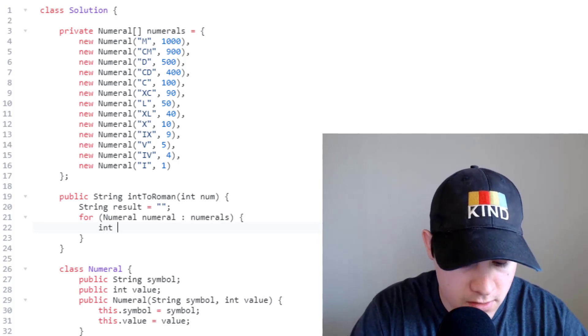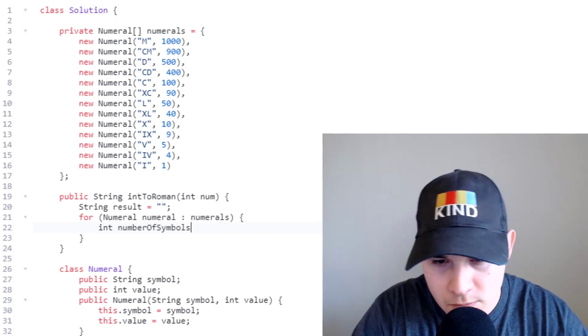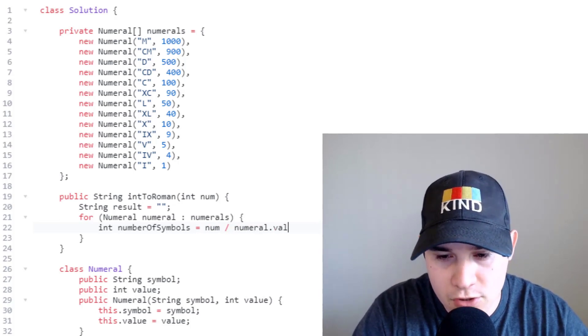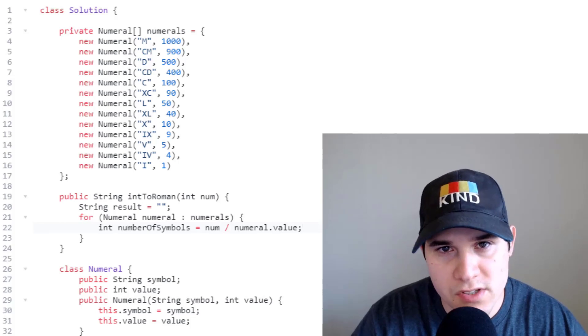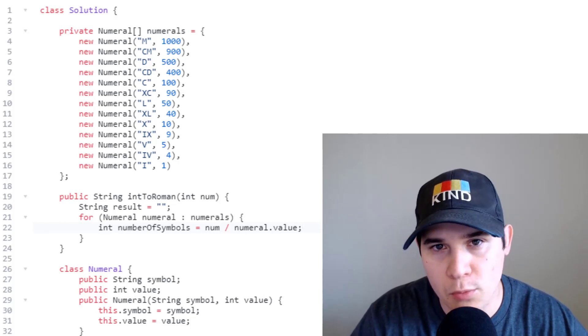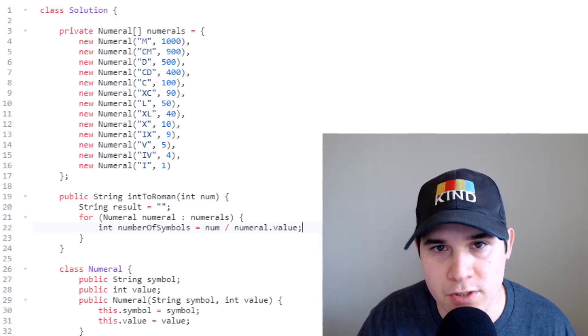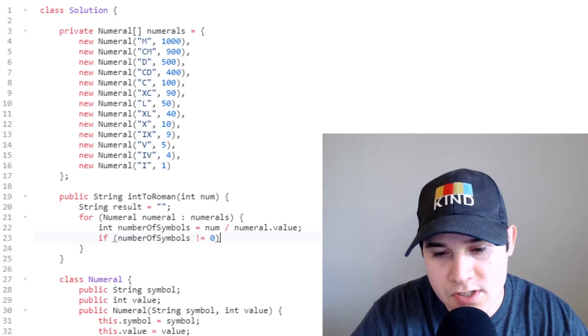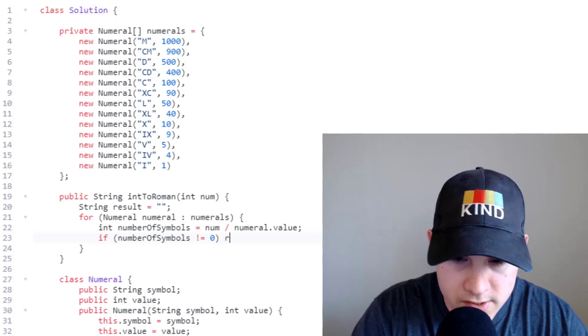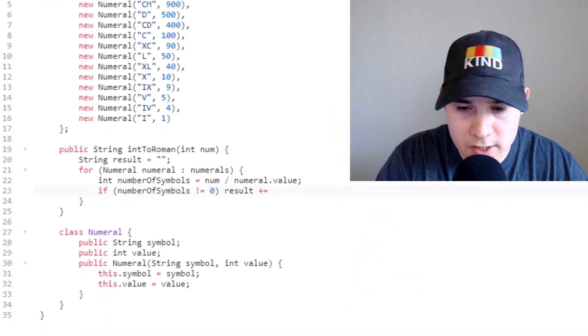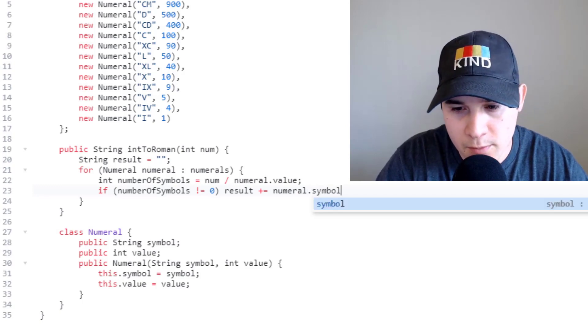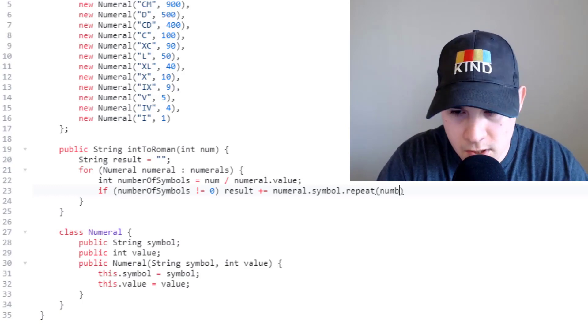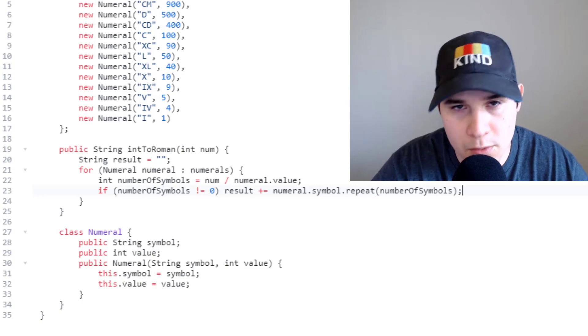Keep in mind if numberOfSymbols is equal to zero we want to completely ignore that roman numeral because it won't be a part of our conversion. So we're going to have to do an extra check here. We'll say if numberOfSymbols, if it's not equal to zero then we add it to our result. We're going to say result plus equals, we're going to take the symbol that we're currently looking at and we're going to repeat it however many times numberOfSymbols is. So numberOfSymbols and that will get appended to our result.